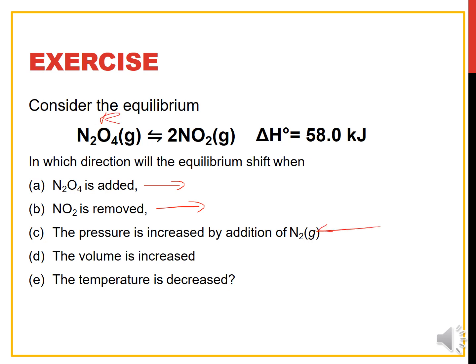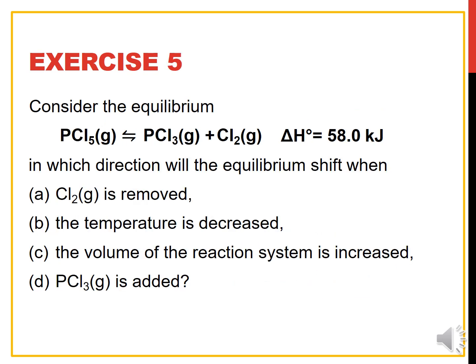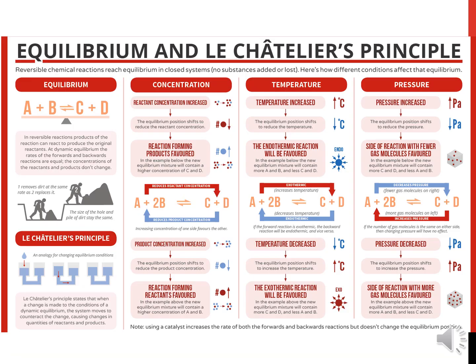If pressure is increased by addition of N₂ gas, pressure increase leads to shifting to the lower number of moles. The lower moles is N₂O₄ on the reactant side, so we shift to the left. Volume increase shifts to the higher moles — the product side — so we shift to the right. Temperature increase: since ΔH is positive, it is endothermic, and if temperature is decreased, the reaction goes backward, shifting to the left.